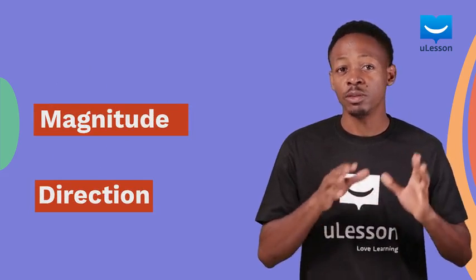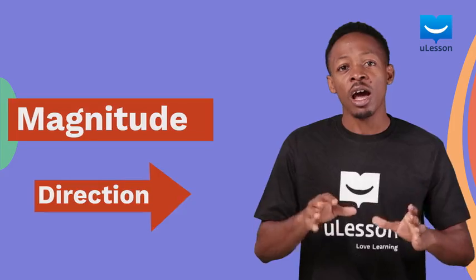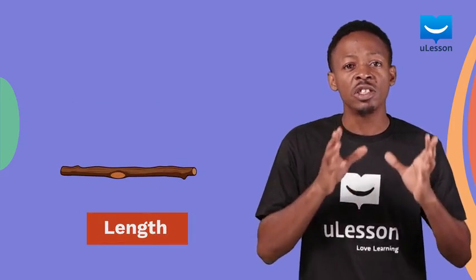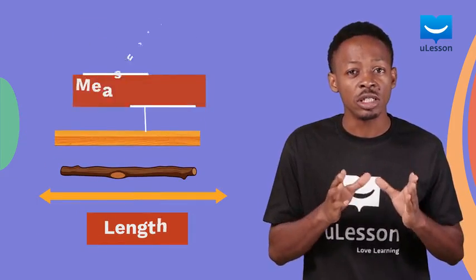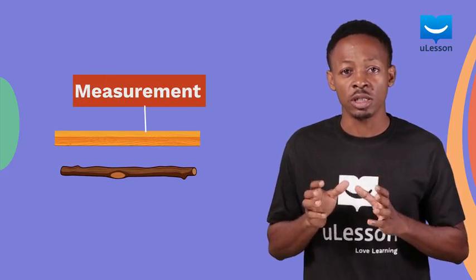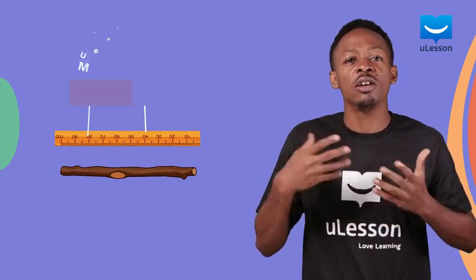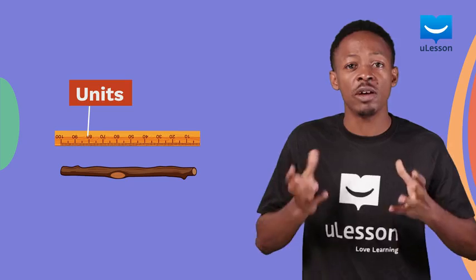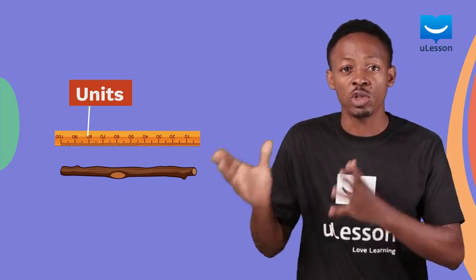A quantity can be described by its magnitude and direction. Measurement is a way of determining the amount of this quantity we have in a given context, and units are the agreed subdivisions that help us to have a standard measurement for each quantity.